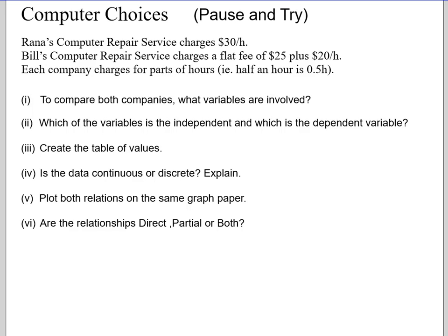Okay, this one you're definitely going to have to pause and try. So Rana's computer service charges $30 an hour. Bill's computer repair service charges a flat fee of $25 plus $20 an hour. So that flat fee is just like the previous question. If you bring your computer in, Bill charges you $25 immediately. And then an additional $20 for every hour he works on it. Each company charges for parts of hours. So you can pay for half an hour. So to compare both companies, what variables are involved? Which of the variables is the independent and which is the dependent? Create a table of values for both. Is the data continuous or discrete? Plot both relationships on the same graph paper. And are the relationships direct, partial, or both? Okay, so pause it there.